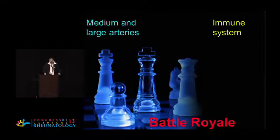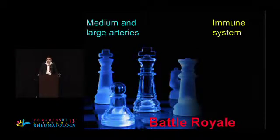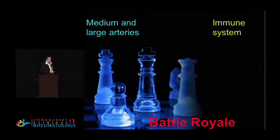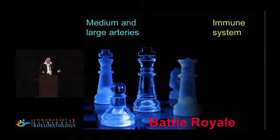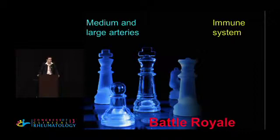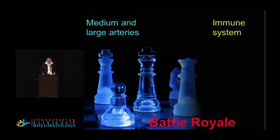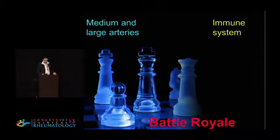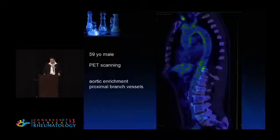So the two big players in this disease are the immune system and the arteries, and by the end of the day they have equal weight. This is not just the immune system — this is as much the blood vessel as it is the immune system. And really, what we are witnessing when we see patients with this diagnosis is the battle royale. So how are they fighting it?